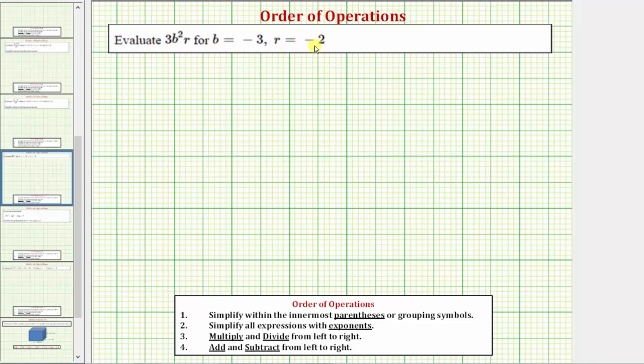To do this, we'll perform substitution for b and r, and then evaluate the expression using the order of operations. To make sure we perform the substitution properly, when performing the substitution, we'll put the values in parentheses. So we're given the expression 3b²r.